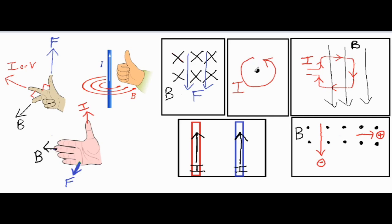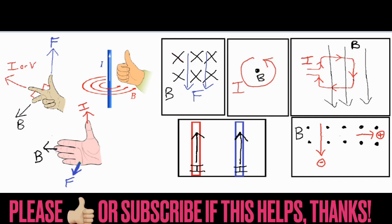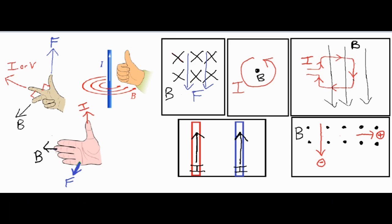That means your thumb would be coming out of the page. For this one over here we have two wires with current running through them. So instead of curling our fingers for the current and our thumb being the magnetic field, it's vice versa — your thumb runs with the current and your fingers curl around with the magnetic field. For our blue wire, if your thumb is going up on the screen, your fingers dig into the page on this side.